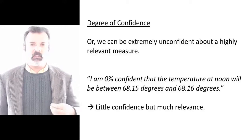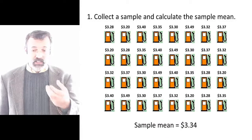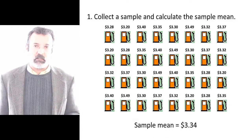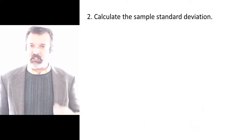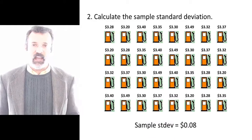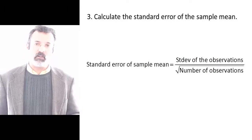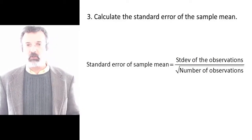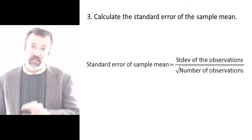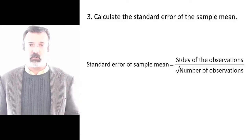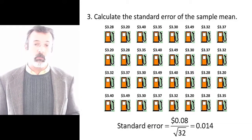To construct a confidence interval we begin by collecting a sample of data — in this case the price of gas — and we calculate the average or mean of that sample. We get in this case $3.34. Next we calculate the standard deviation of these observations, in this case 8 cents. Using this, we construct the standard error of our sample measure. The standard error of a sample mean is the standard deviation of the observations divided by the square root of the number of observations — in this case, 0.08 divided by the square root of 32, or 0.014.